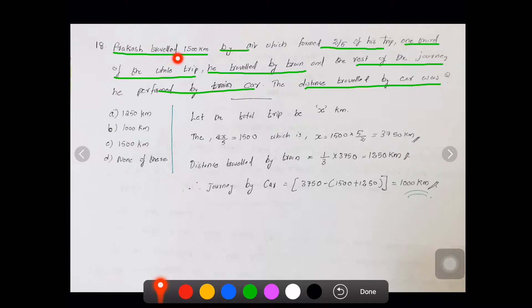The question is: Prakash travelled 1500 km by air, which formed 2/5 of his trip. One third of the whole trip he travelled by train and the rest of the journey performed by car.